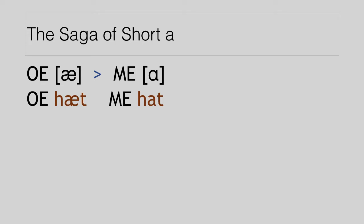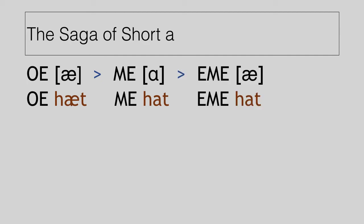Short A has a kind of interesting history. The vowel that we call short A in Old English was an [æ] sound. And then in Middle English, that [æ] became an [a] sound. So the Old English word hæt becomes, in Middle English, to be pronounced hat. And then in Early Modern English, it's like it changed its mind and it went back to an [æ] sound. So Middle English hat becomes Early Modern English hæt.